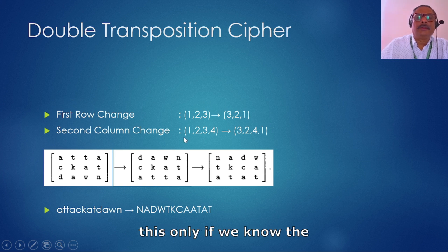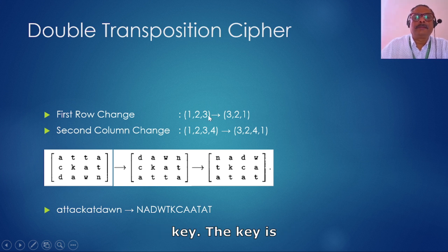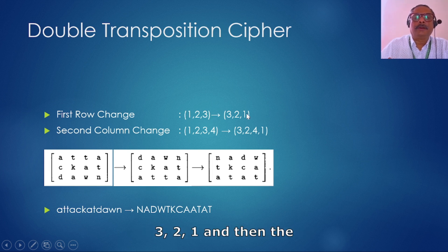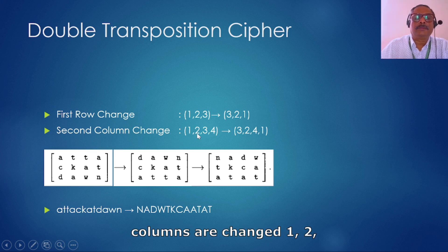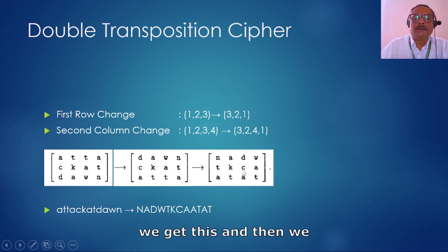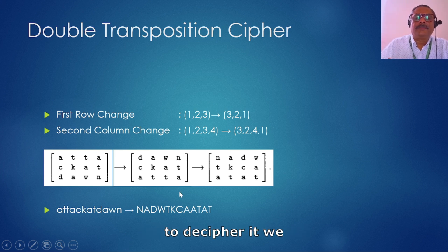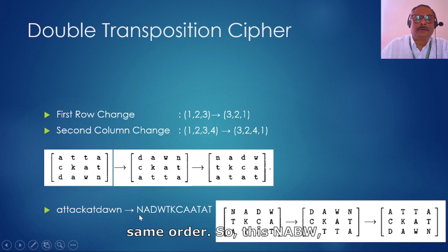From this ciphertext it becomes quite difficult to recover the original message. The key is: rows are changed so that 1 2 3 becomes 3 2 1, and then columns are changed so that 1 2 3 4 becomes 3 2 4 1, giving us the final ciphertext.